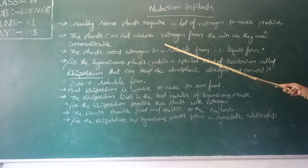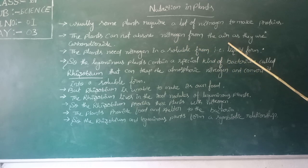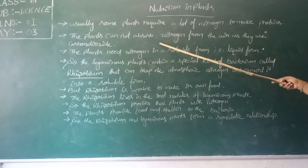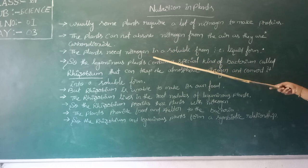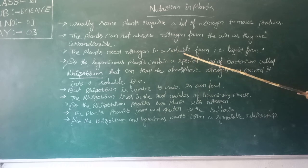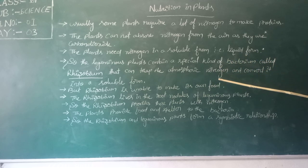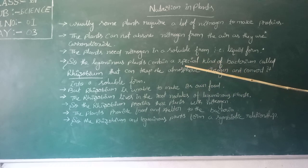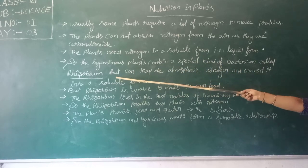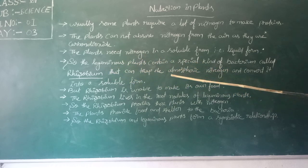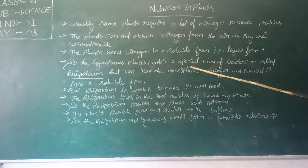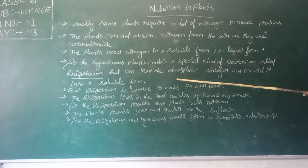Leguminous plants cannot get nitrogen directly from the air like they use carbon dioxide. They require nitrogen in soluble, that is, liquid form. The leguminous plants contain a special kind of bacterium called Rhizobium, which can trap atmospheric nitrogen and convert it into the soluble form.